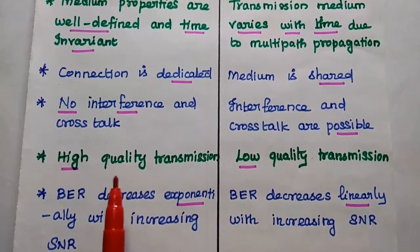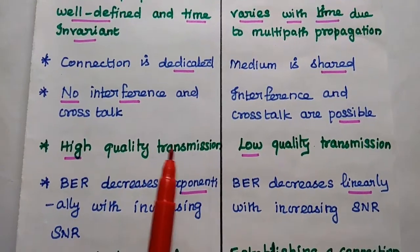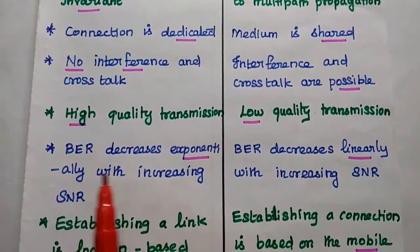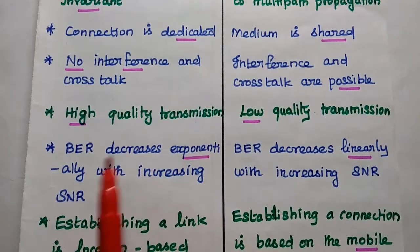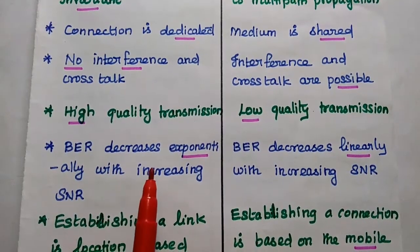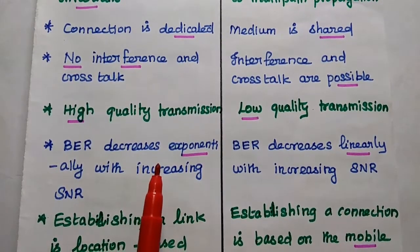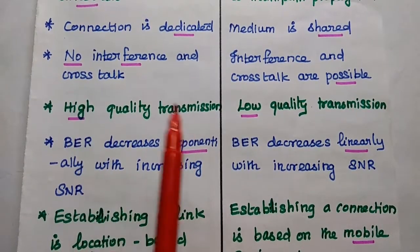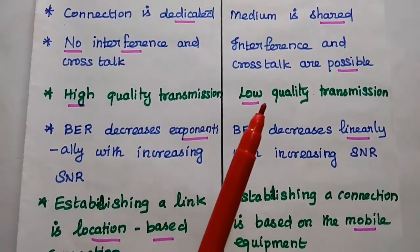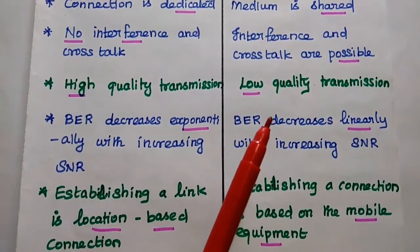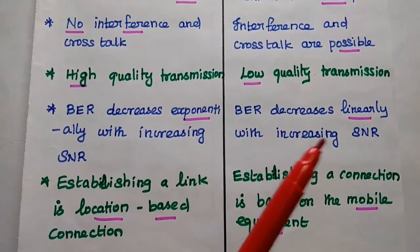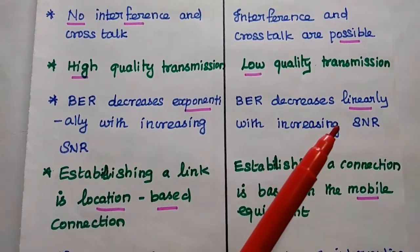Wired provides high quality transmission while wireless provides low quality transmission. The bit error rate decreases exponentially with increasing signal to noise ratio because of this high quality transmission and no interference. But in wireless medium, the bit error rate decreases linearly with increasing signal to noise ratio.